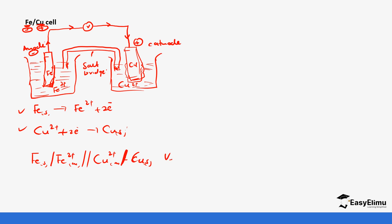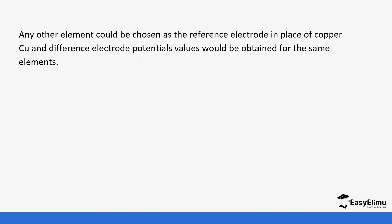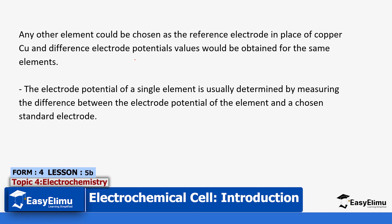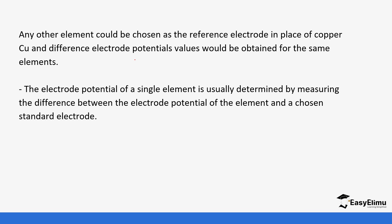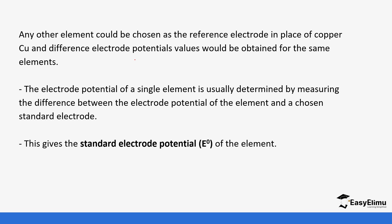That brings us to the end. The e-cell calculation will be covered later when we get to the calculation of EMF. Any element can be chosen as a reference electrode in place of copper, but the electrode potential values must be obtained relative to the same chosen standard. The electrode potential of a single element is determined by measuring the difference between its electrode potential and the chosen standard electrode. We will look at standard electrode potential in our next lesson, where we will connect other cells to it. See you in the next lesson.